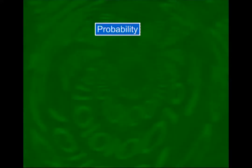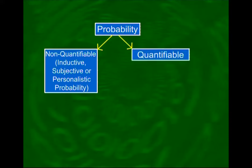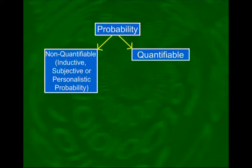In the last lecture and in today's lecture I have discussed various approaches to probability. The diagram on the screen depicts these various approaches and definitions. We can say that probability is of two kinds: non-quantifiable and quantifiable. By non-quantifiable I mean the inductive approach — the subjective or personalistic probability. You will recall the example from the last lecture where a panel of three judges hears a trial: two decide on the basis of evidence that the accused is guilty, but one decides the evidence is not strong enough.